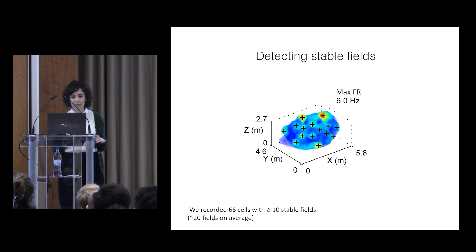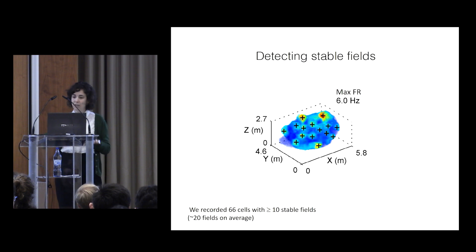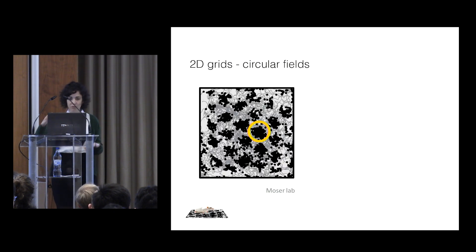So we detect the stable fields. And now we ask, how are these fields arranged in space? And which of the characteristics that we saw in 2D grids maintain in 3D? So I'll go property by property that we know from 2D grid cells.